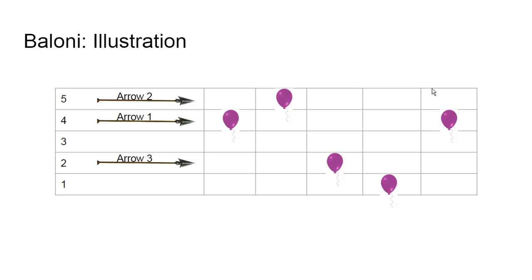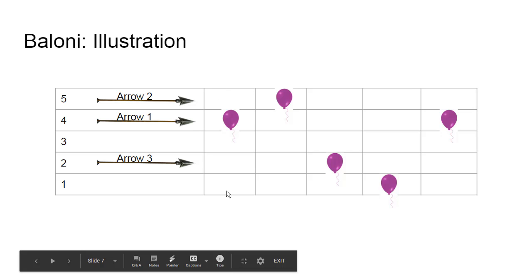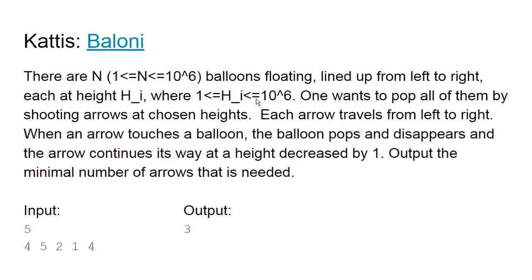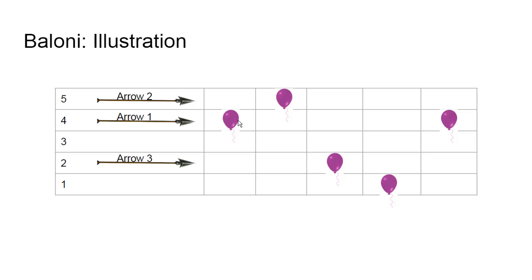This approach works, but what is the complexity? The worst case complexity is O(n²). It's not dependent on the height — only on n. In the worst case, we may need n arrows, and we simulate the trajectory of each arrow, which is linear in n. The first balloon requires scanning through n balloons, then n minus one, and so on — so it's still quadratic.